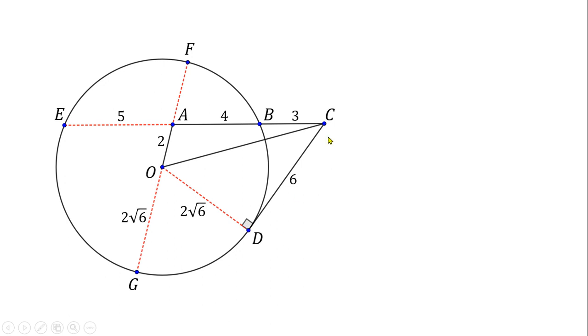Now, ODC is a right triangle. And so, to find OC, we can just apply the Pythagorean theorem. So, we have the equation OC squared equals the square of 2 square root of 6 plus 6 squared. Solving for OC, we get OC equals 2 square root of 15. And so, this is our final answer.